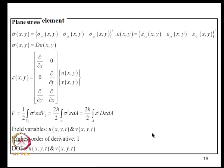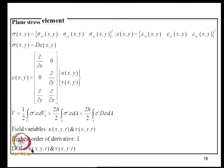For a plane stress element, the functional contains ε^T D ε where the strains involve first-order derivatives of field variables U and V. The highest derivative order is 1, so N-1 = 0, and the nodal degrees of freedom are simply U and V.